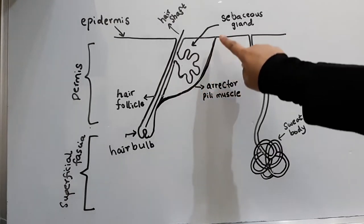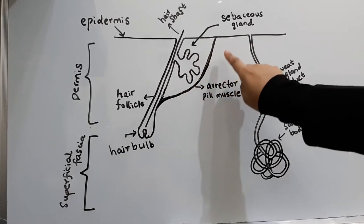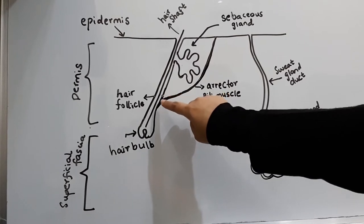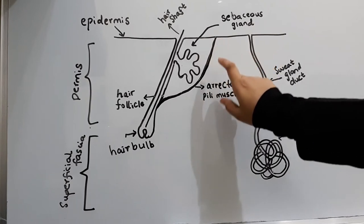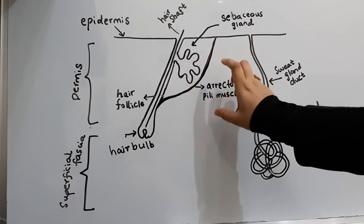This is a band of smooth muscle called the erector pili muscle that connects the lower part of the hair follicle to the superficial part of the dermis of the skin. This muscle is innervated by sympathetic nerve fibers.